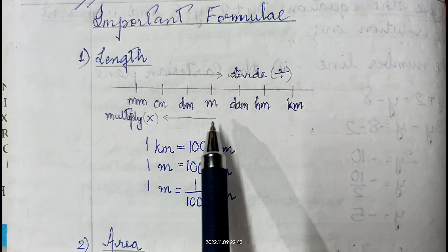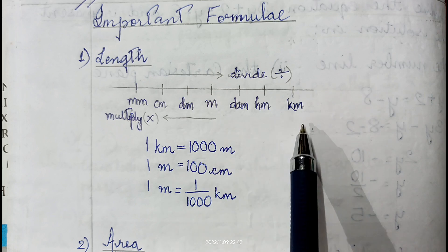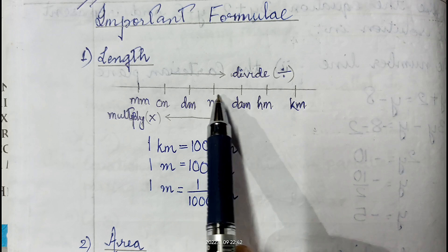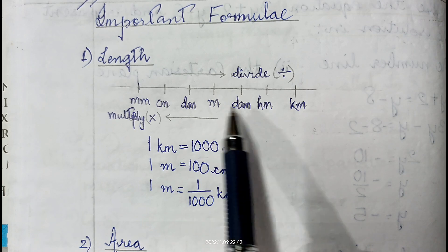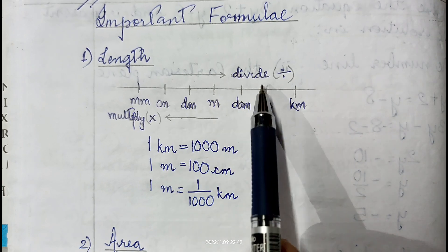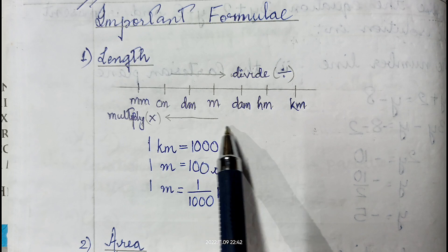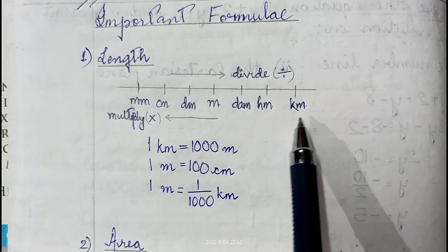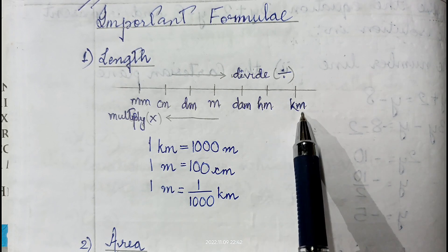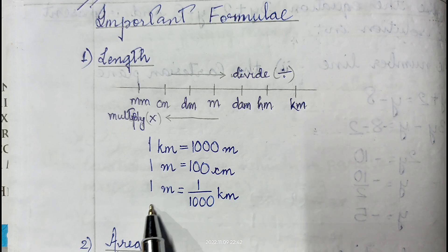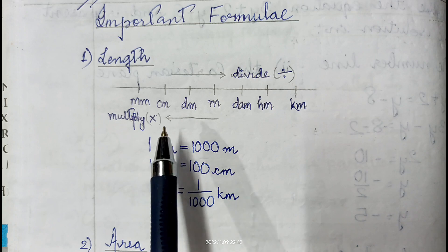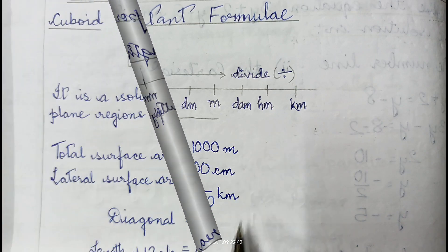If we want to convert from meter to kilometer, we are going from a smaller unit to a bigger unit, so we have to divide. From meter to decameter, then hectometer, then kilometer — that is 3 places. So 1 meter is 1/1000 kilometer. In this way we can convert one unit to another.